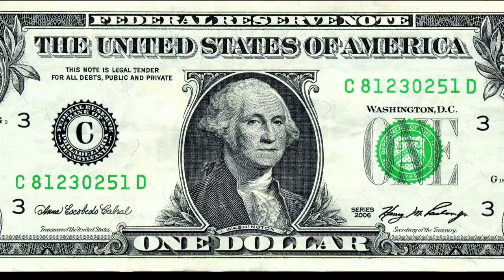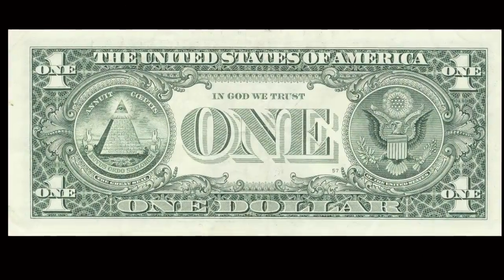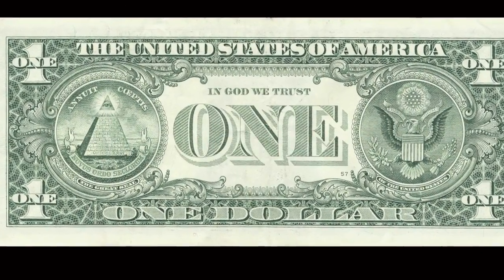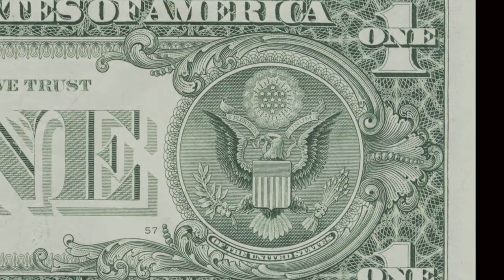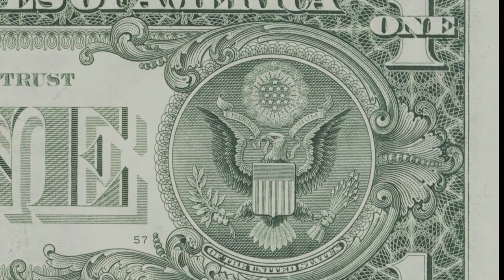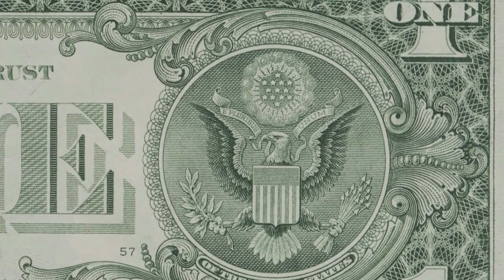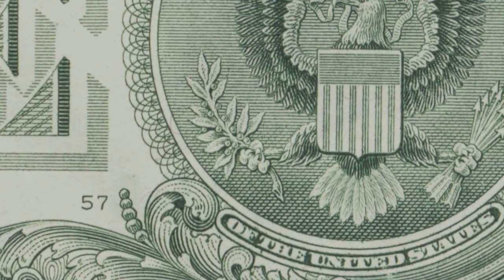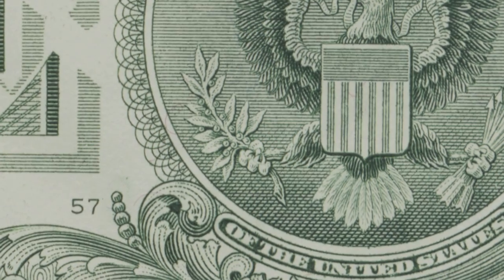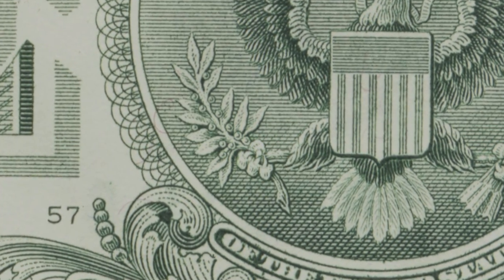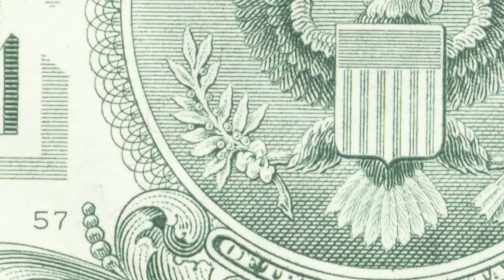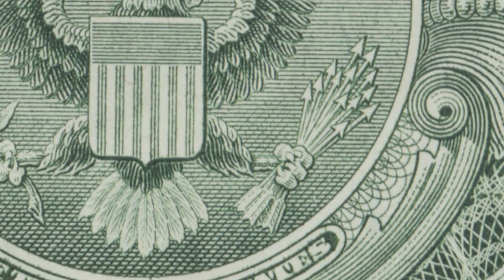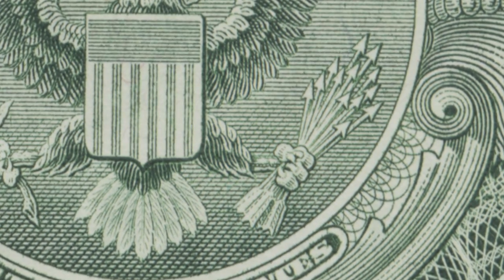We're done with the George Washington side. We move on to the other side, also called the reverse. This intricate design is the Great Seal of the United States, featuring the American eagle. The eagle is holding in its right talon an olive branch of 13 leaves and 13 olives, symbolizing peace. In the left talon are 13 arrows, representing the 13 colonies' fight for freedom.